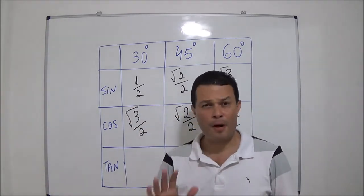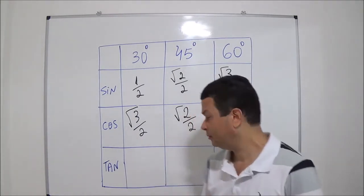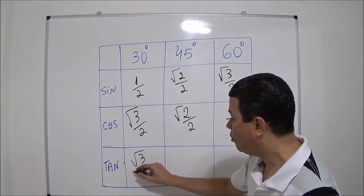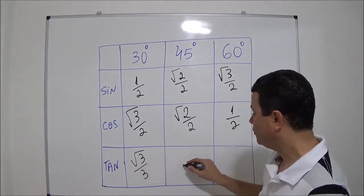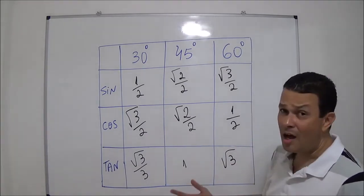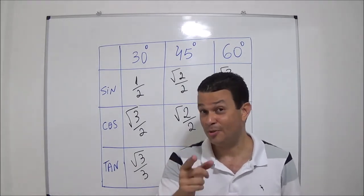Alright, this is the first part of the song. Let's see the second part. Square root of three over three. One square root of three. Now that I've learned, I'll sing, do you see?